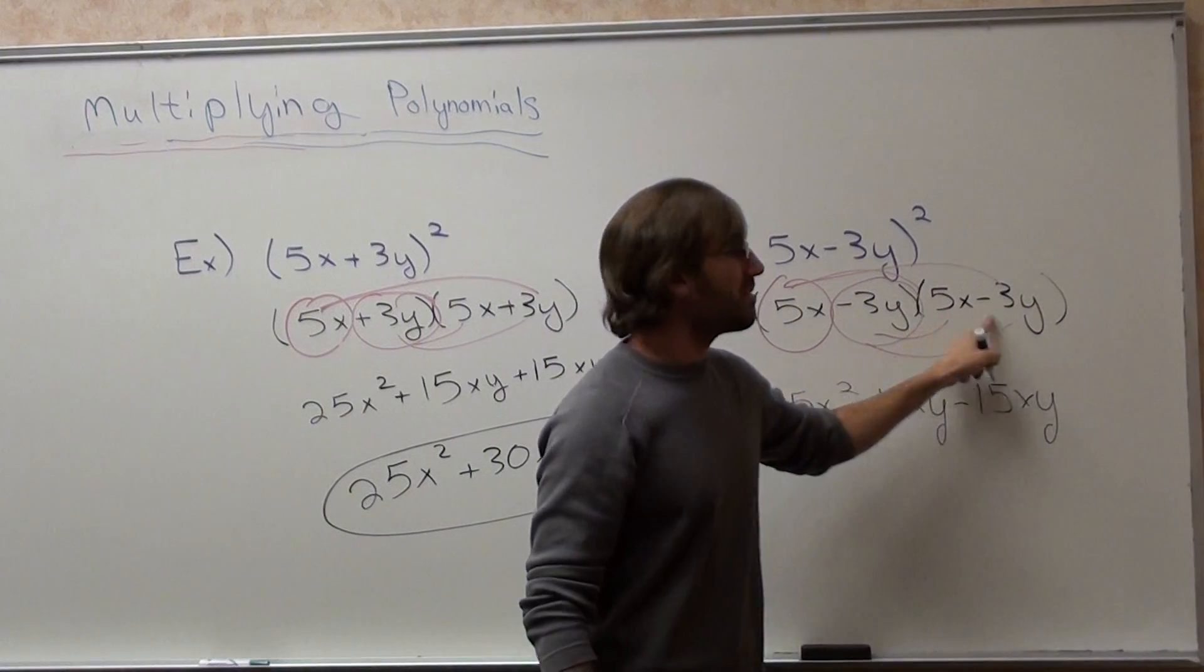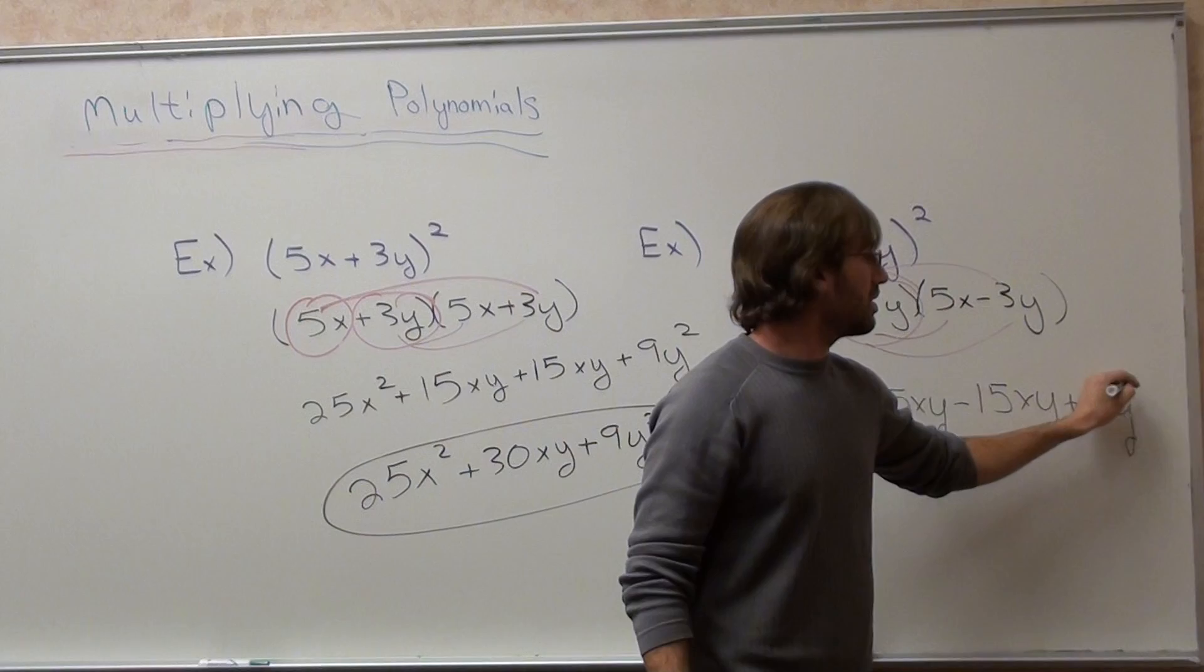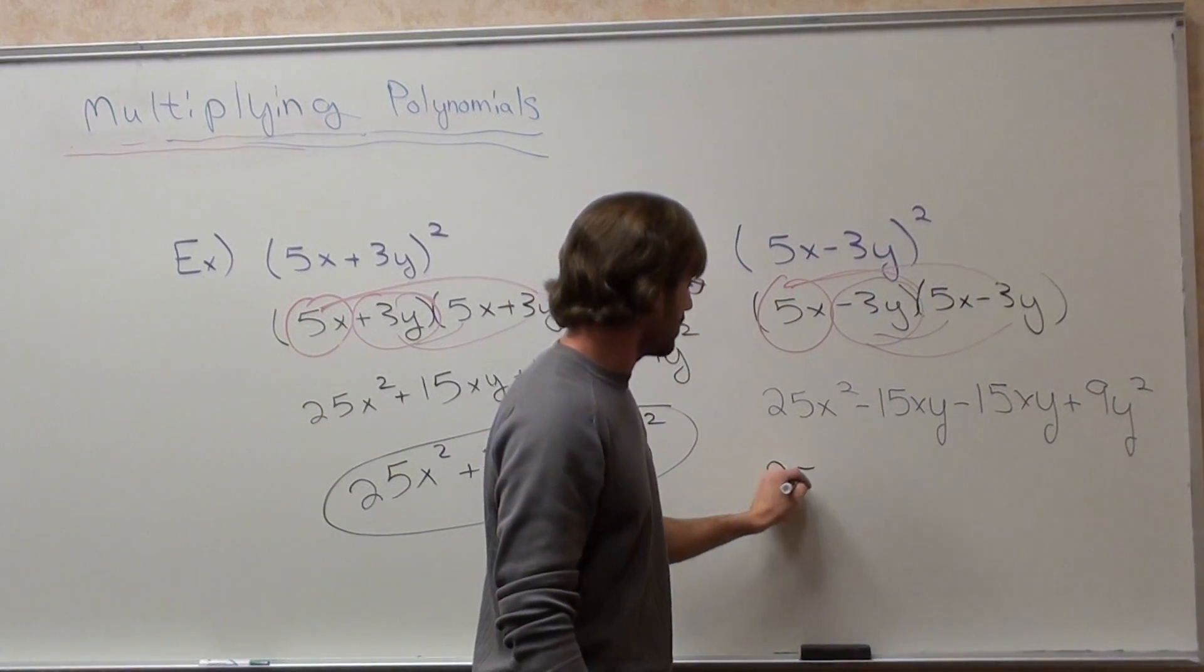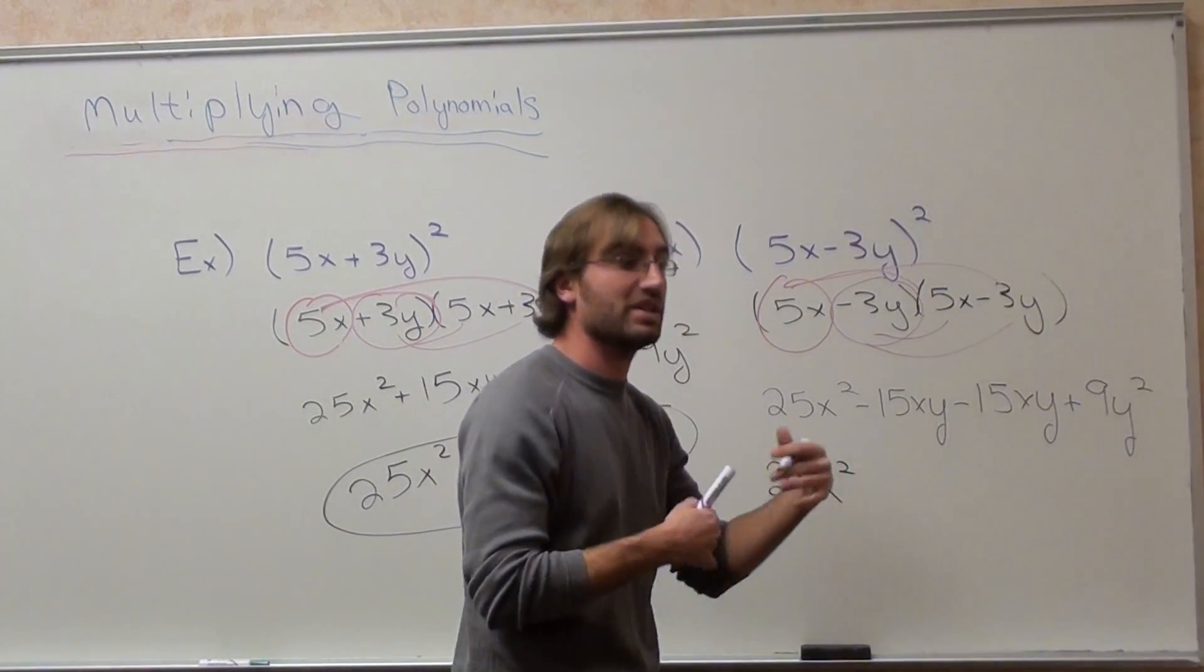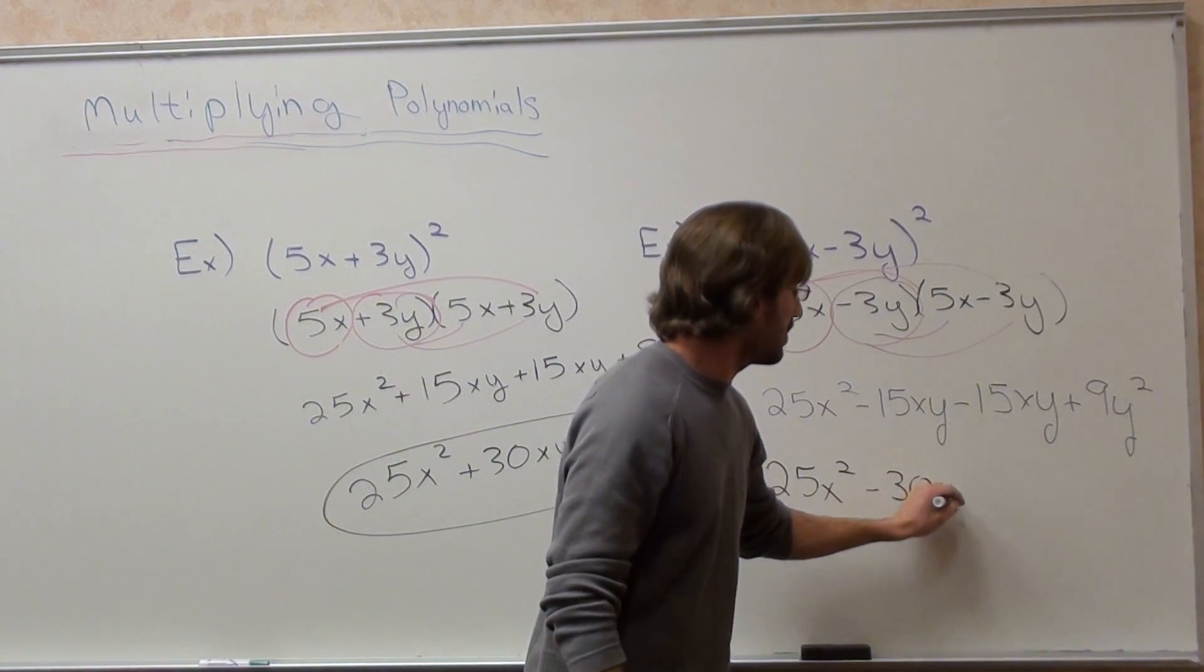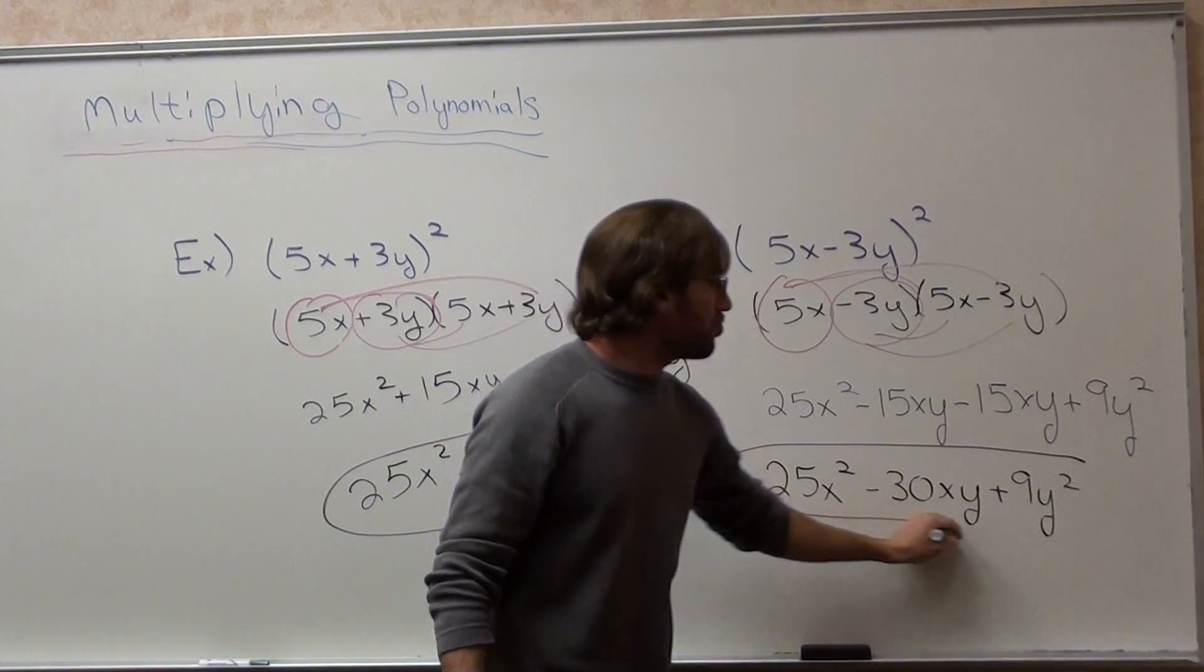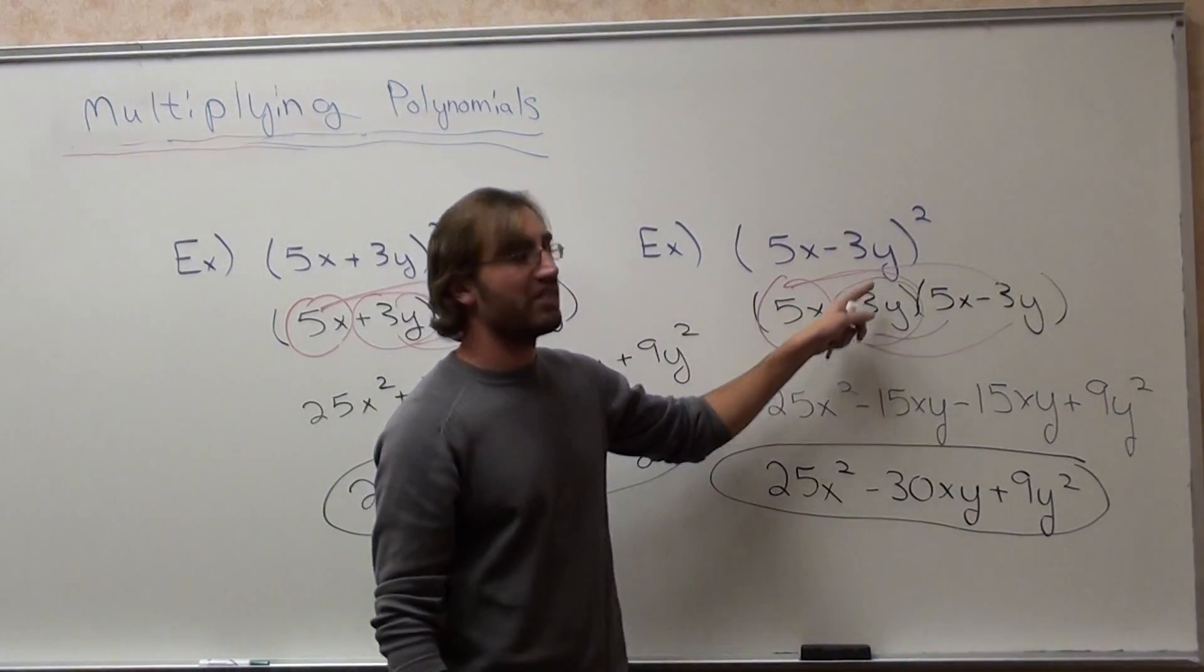5x times negative 3y is negative 15xy. And negative 3y times 5x is negative 15xy. And negative 3y times negative 3y. Negative times negative is a positive. 3 times 3, 9y squared. Combine like terms. Negative 15xy plus another negative 15xy is negative 30xy.